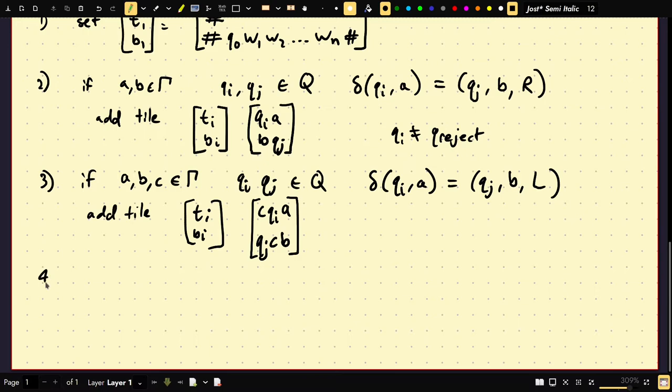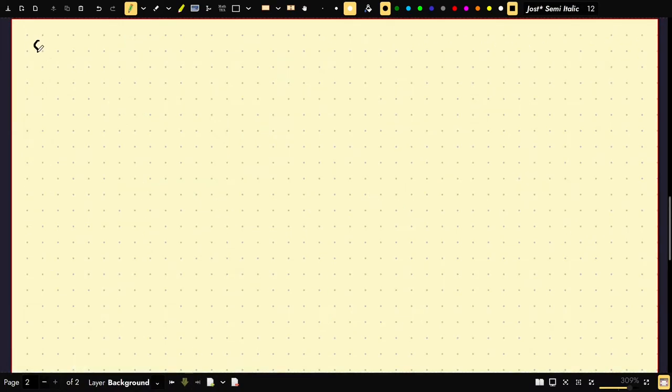So if we have this of the form, we're going to add tile, which is going to be TI, BI. It's going to be like QIA over BQJ. Now you may notice, this is kind of like the proof we did for unrestricted grammars being Turing complete. Three, if A, B, C is in gamma, and we're going to add tile so we're going to have TI, BI, and this is going to be CQI, A, so we're going to read this A, write the B, and then move left. So what that's going to give us is QJCB.